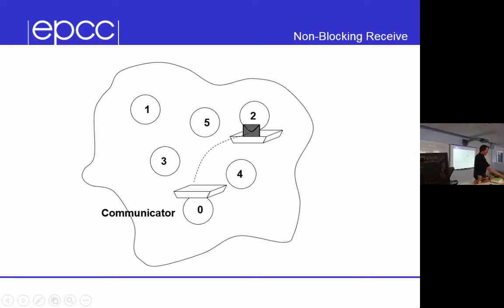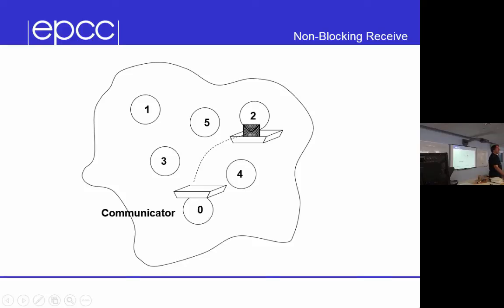Non-blocking receive is like an inbox. Normally with a receive you stand there and wait for the message to come in. With a non-blocking receive you say 'here's where I want to put it — put it there when it comes in,' and every now and again you come and check if it's arrived. You cannot read the data until you know it's come in. You must not read that data until you confirm it's been delivered.